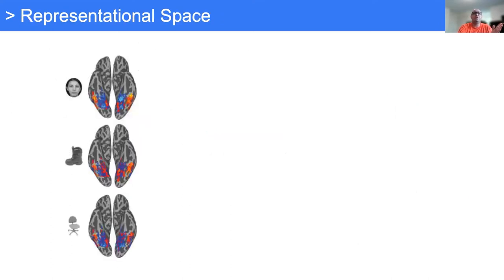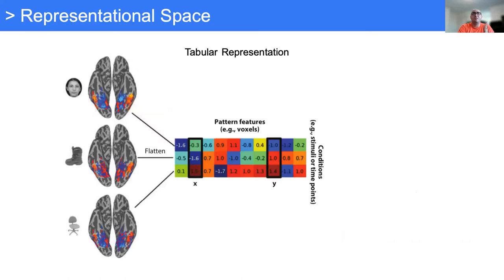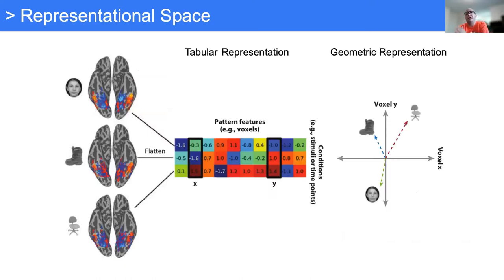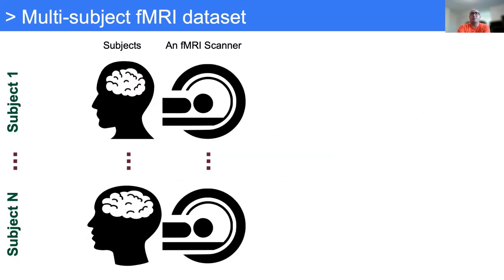We have neural activity for each stimulus, a tabular representation, and a geometric representation. In my world, people call this the representational space — mathematicians call it vector space. They are actually the same thing, just different abbreviations for the same concept.